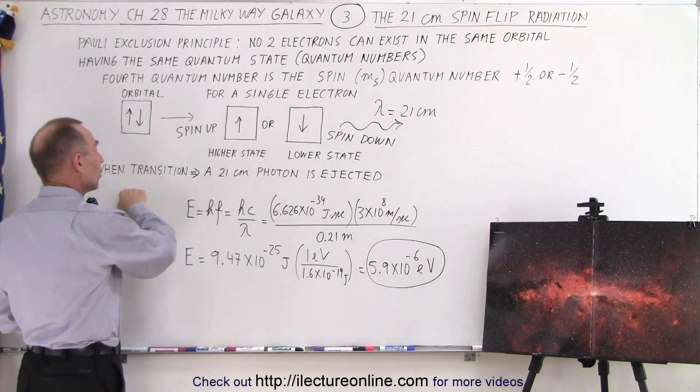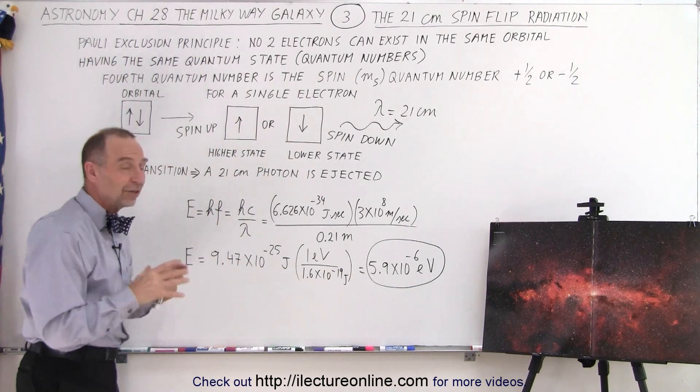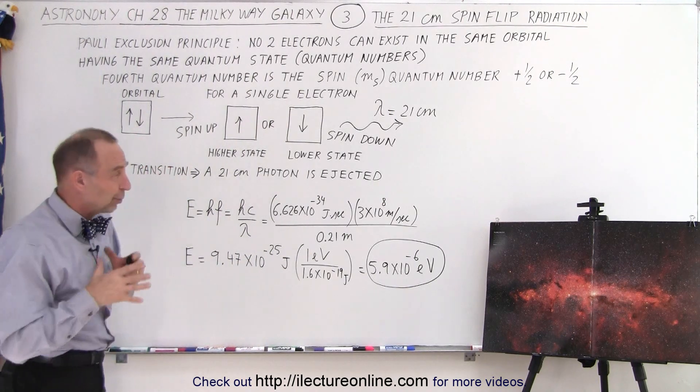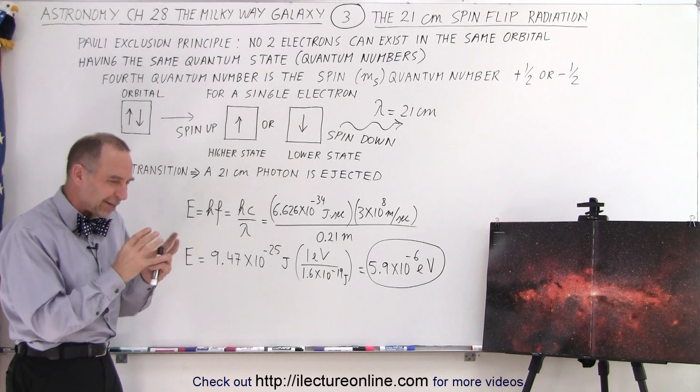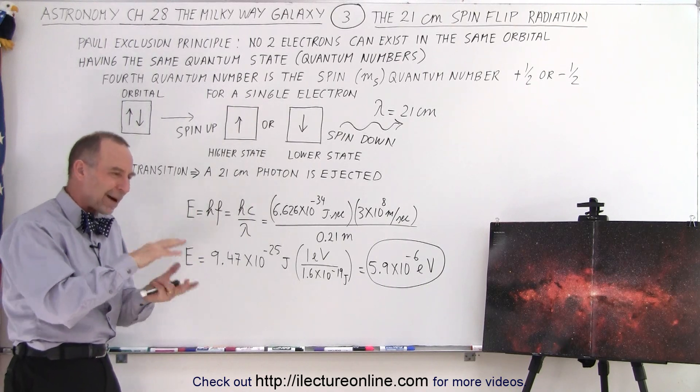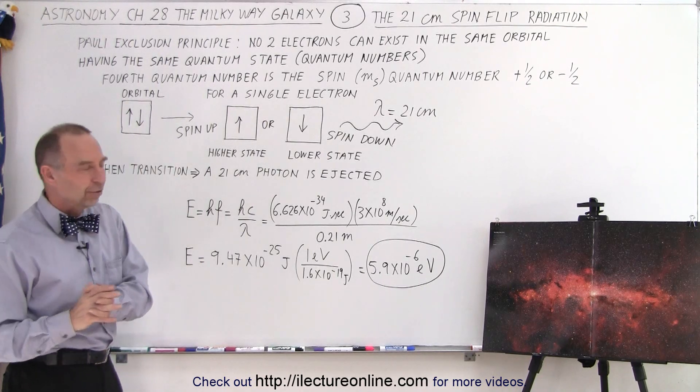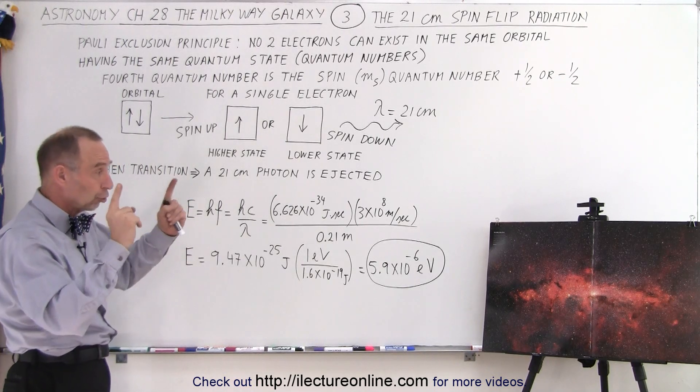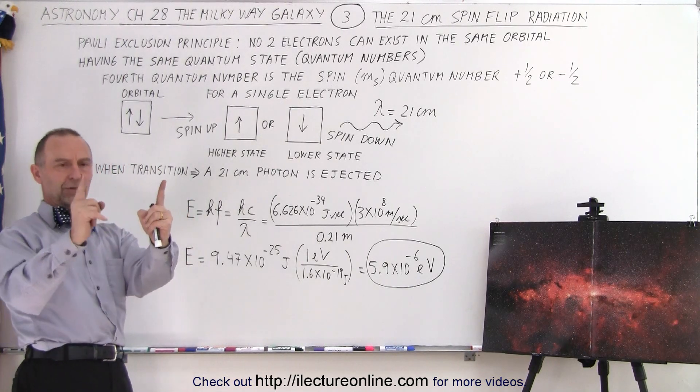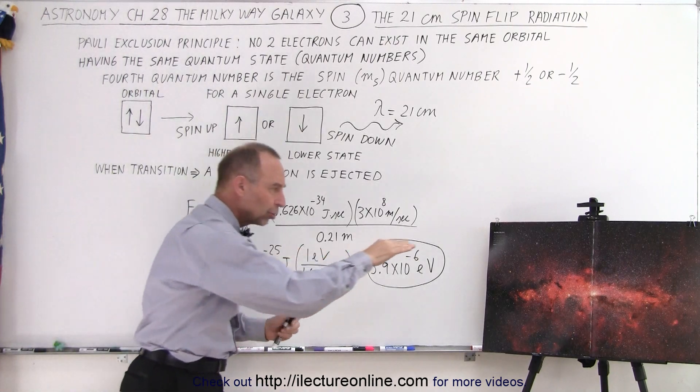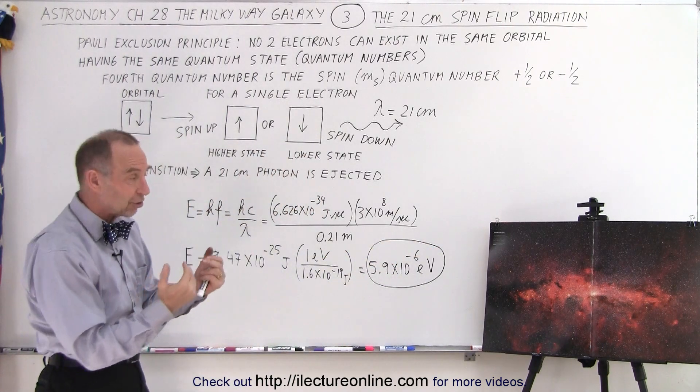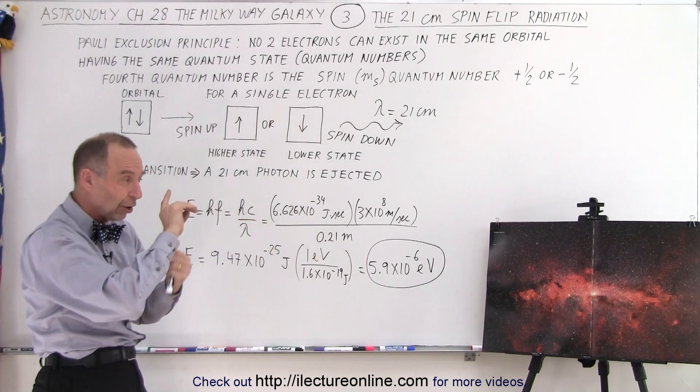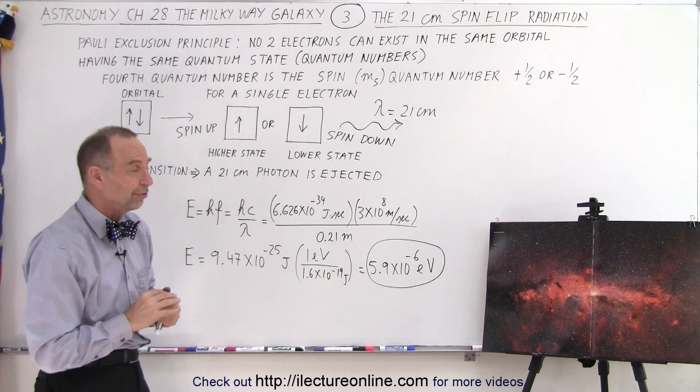When it transitions, that 21 centimeter photon is ejected, and we can detect that with radio telescopes, because 21 centimeters is kind of between microwaves and radio waves. And so that is able to be detected via radio telescopes in those long 21 centimeter wavelengths, which are about 8 inches. They can make it through those nebulas and dust.